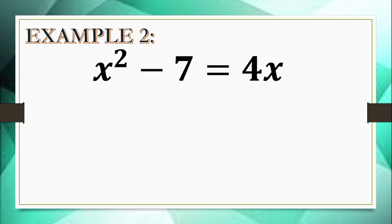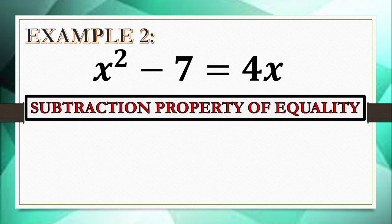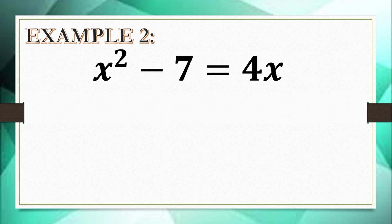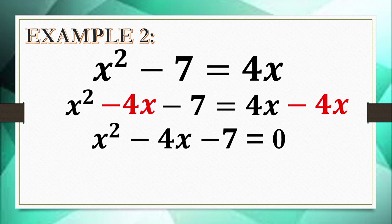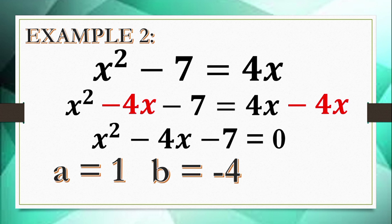Let's have example number 2: x² minus 7 equals 4x. Here, 4x is written on the right side of the equation, so this is not in standard form. We utilize the subtraction property of equality — subtract both sides by 4x to make the right side equal to 0. Therefore, the standard form is x² minus 4x minus 7 equals 0, where a is 1, b is negative 4, and c is negative 7.